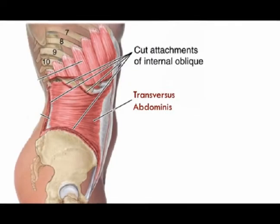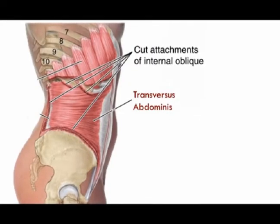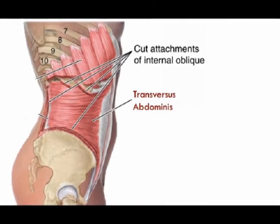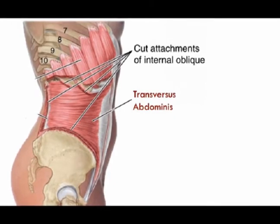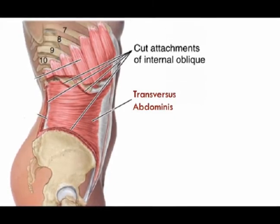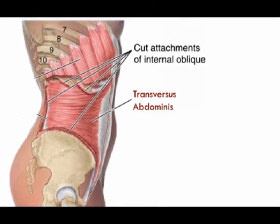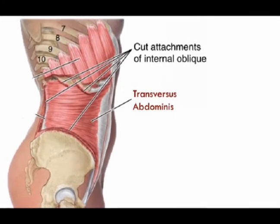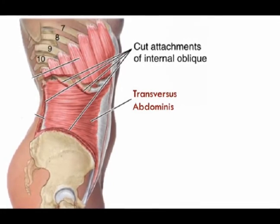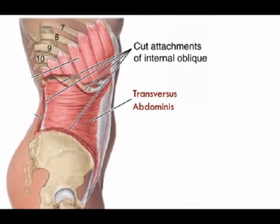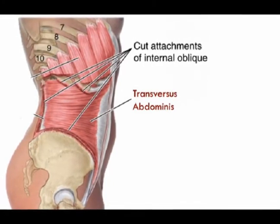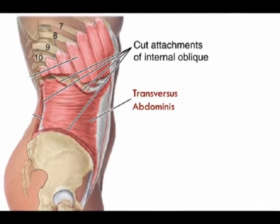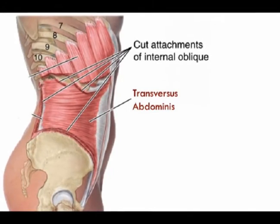Now, the most important thing is the function of these muscles. These muscles function to compress the abdominal area, which increases the intra-abdominal pressure. They also help to stabilize the spine and support the abdominal region, and they function in forced expiration.